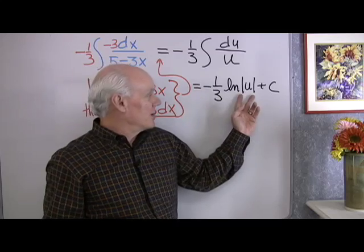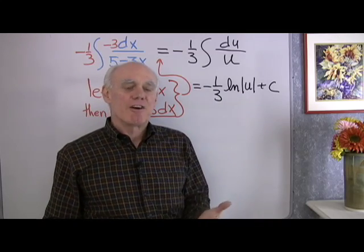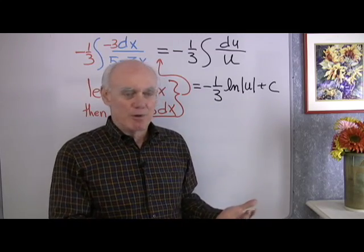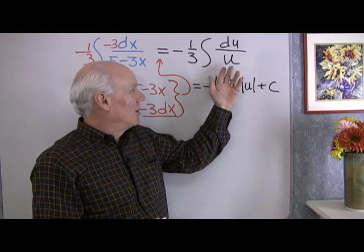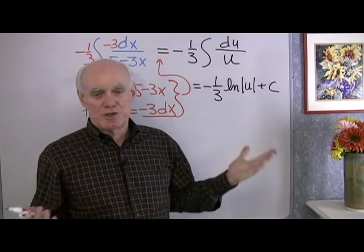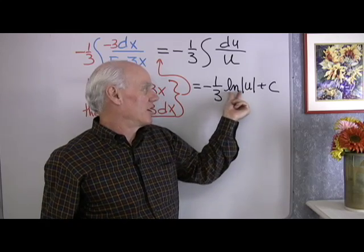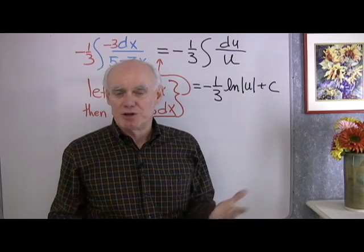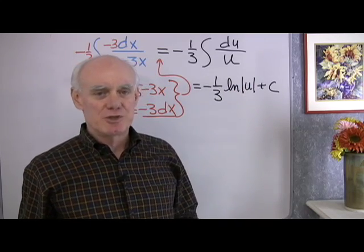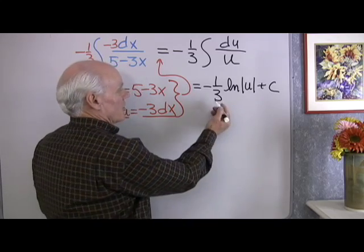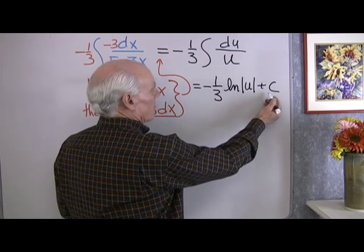The absolute value there is necessary because logarithms, you can't find the logarithm of a negative number, and just in case we're not sure what's going on here with the u, suppose that it could come out negative for some reason, we want to make sure in our answer we're not taking the logarithm of a negative number, so just put the absolute value symbols in, no problem with that. So negative 1 third natural log u plus c.